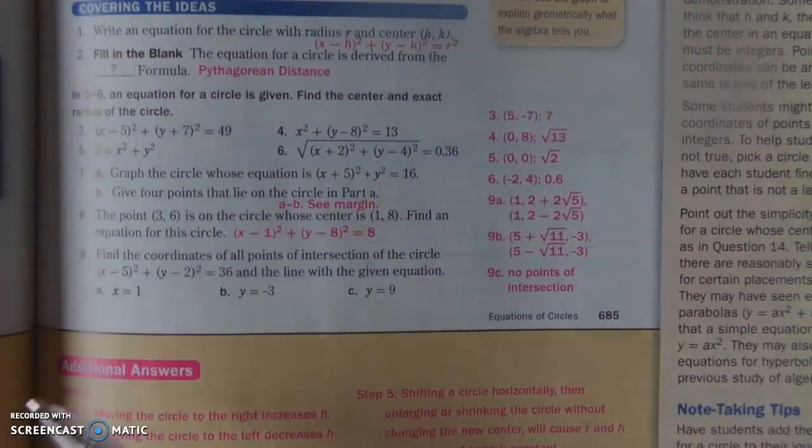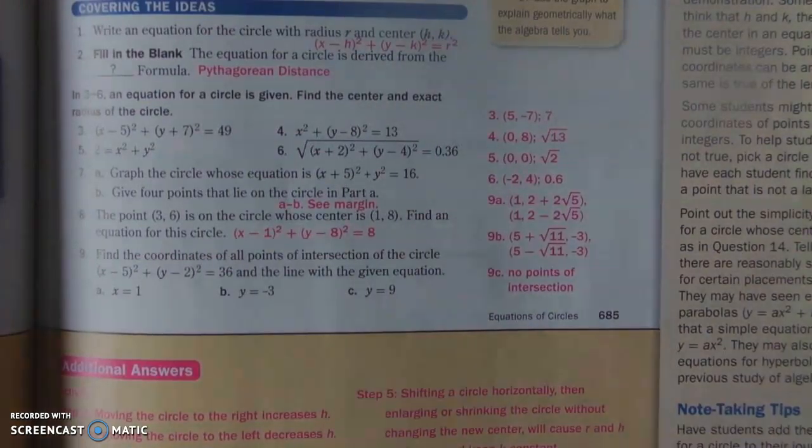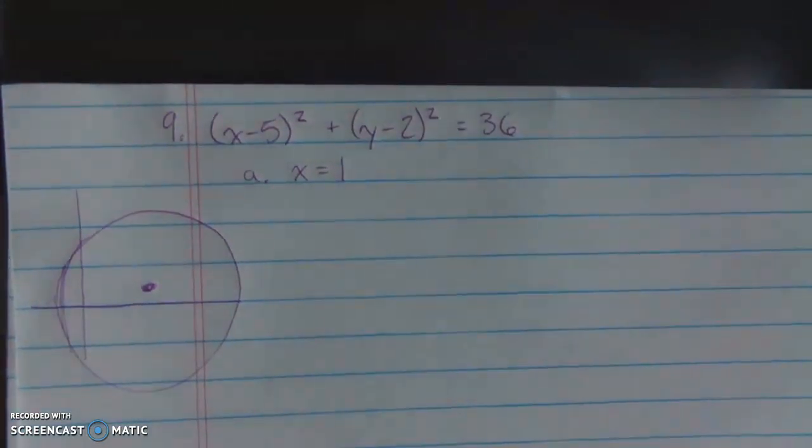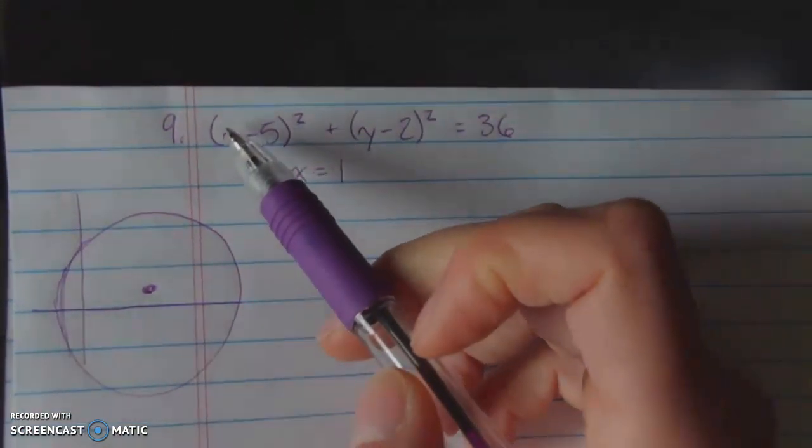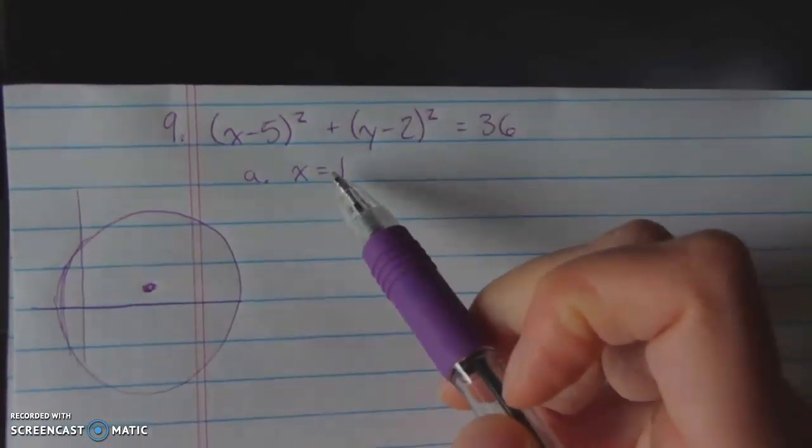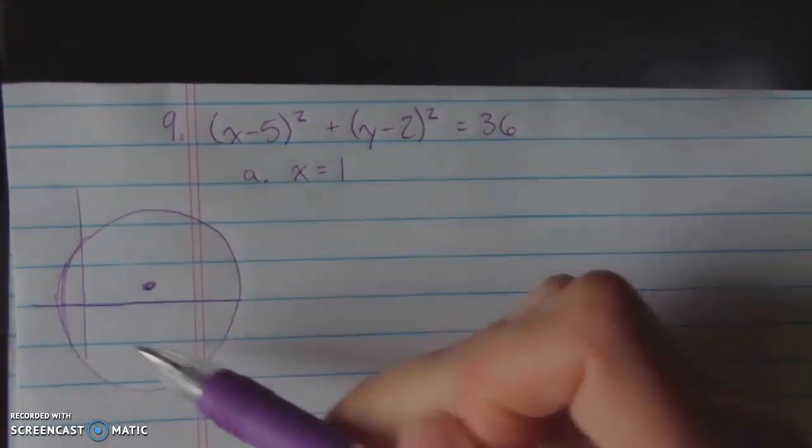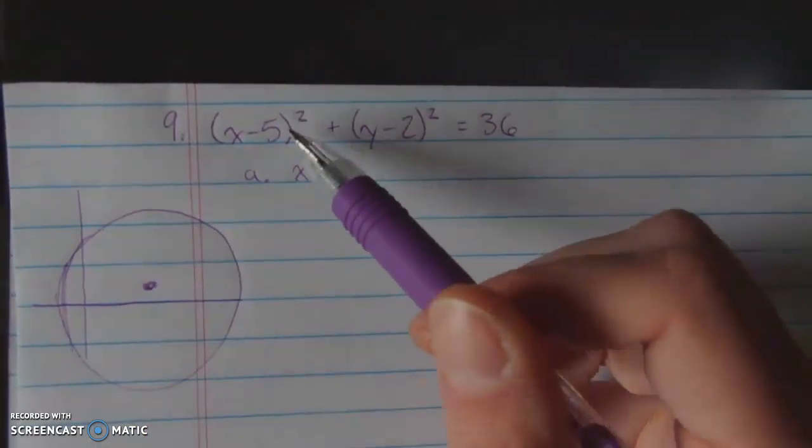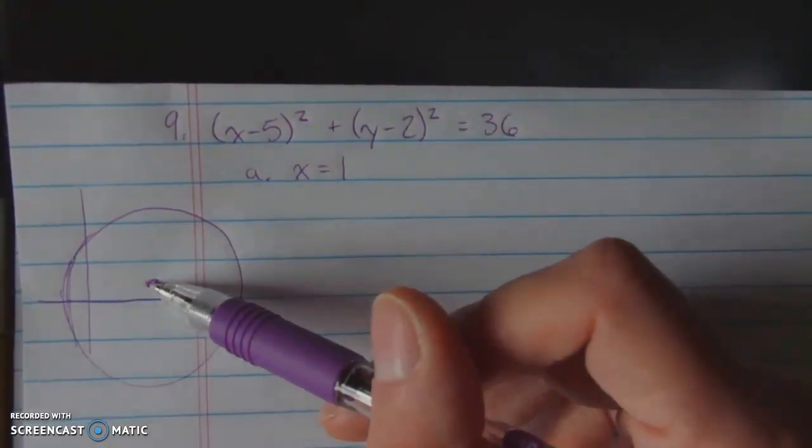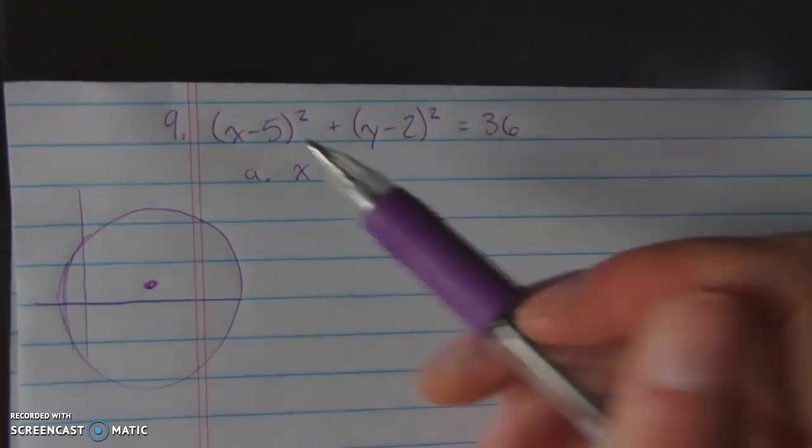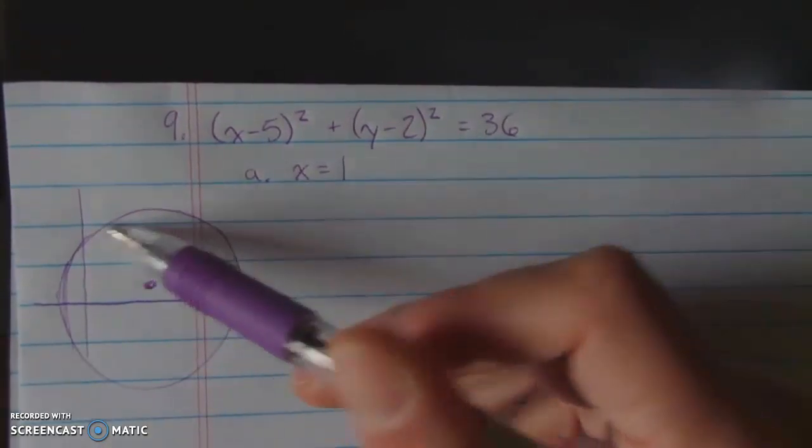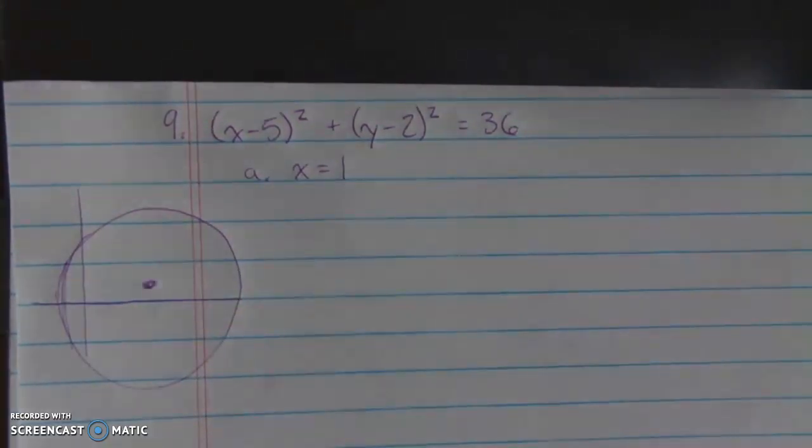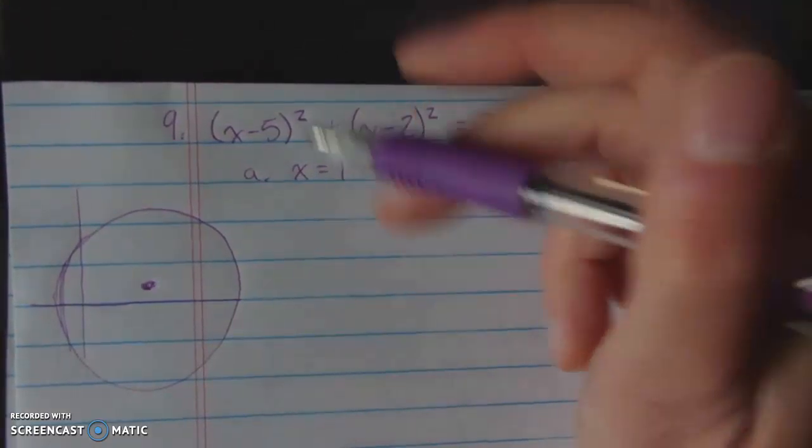For our next problem, number 9, I have already started setting up this equation. What I want to know is, what is the intersection between this circle and this line? And I drew myself a quick sketch, because I really like having sketches. You can see how messy this one is, it doesn't even have a scale. What I want to know is, what is the point of intersection of the line x equals 1?